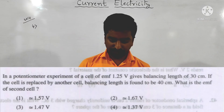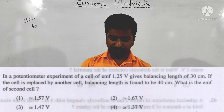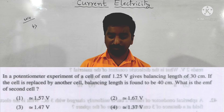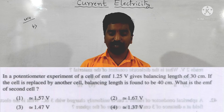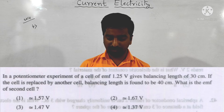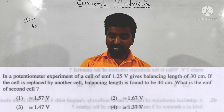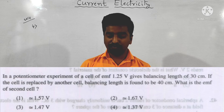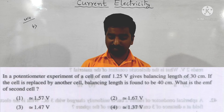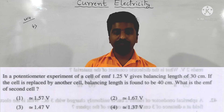Next question from the same year: in a potentiometer experiment, a cell of EMF 1.25 volt gives a balancing length of 30 cm. If the cell is replaced by another cell, the balancing length is found to be 40 cm. What is the EMF of the second cell?